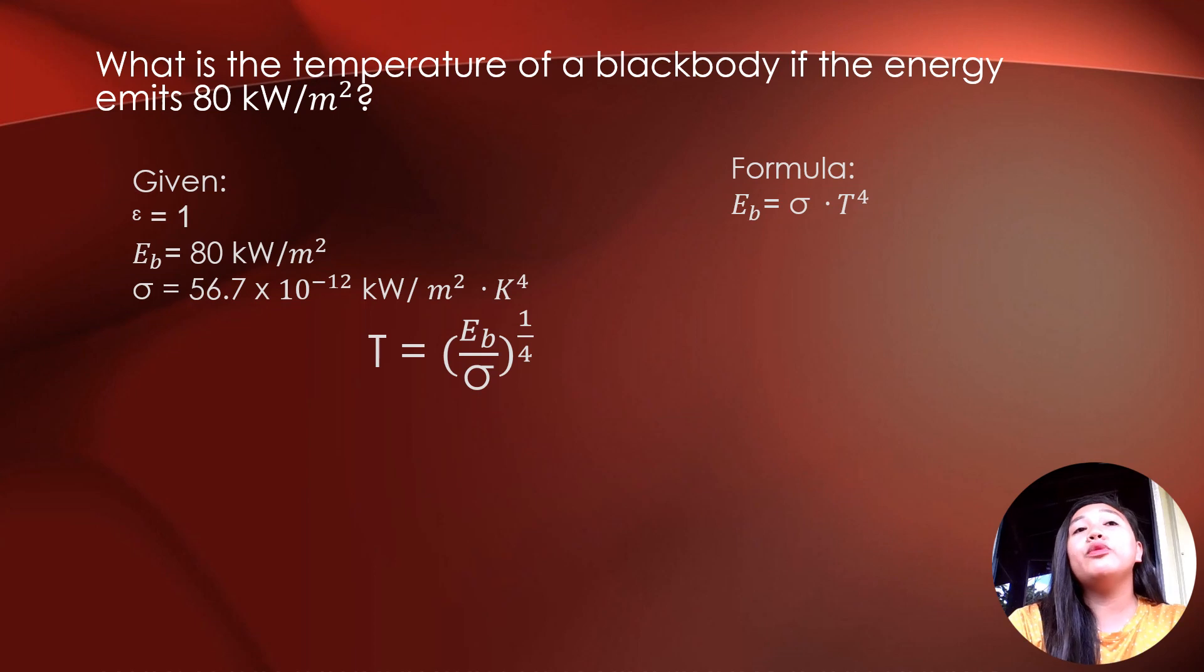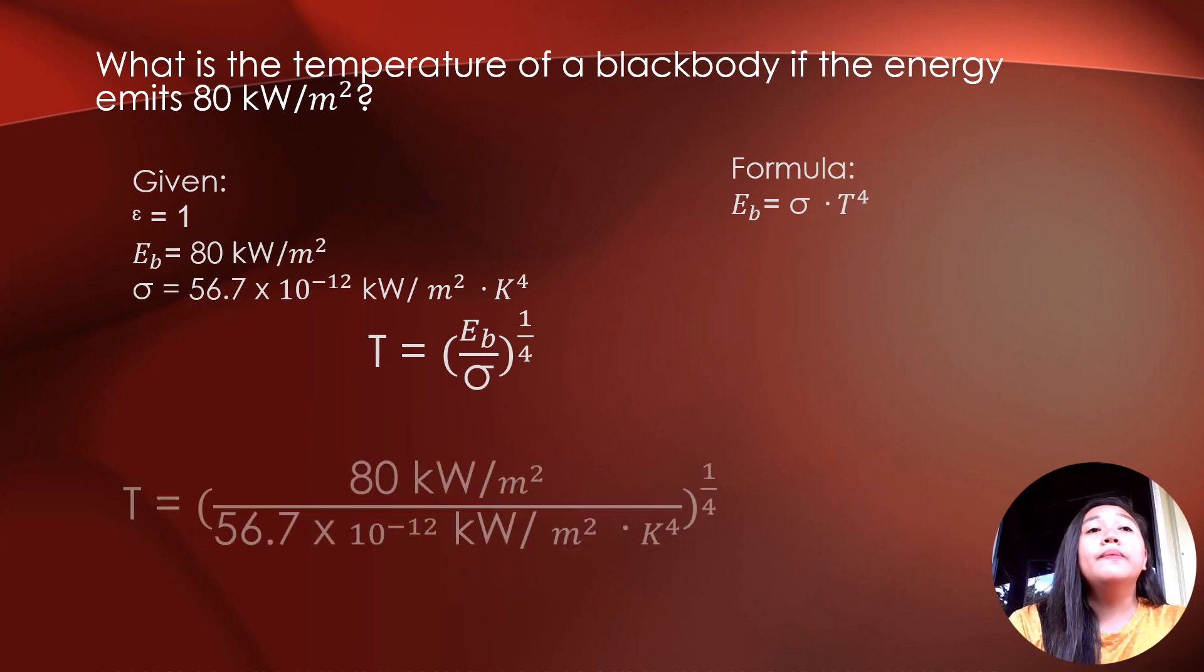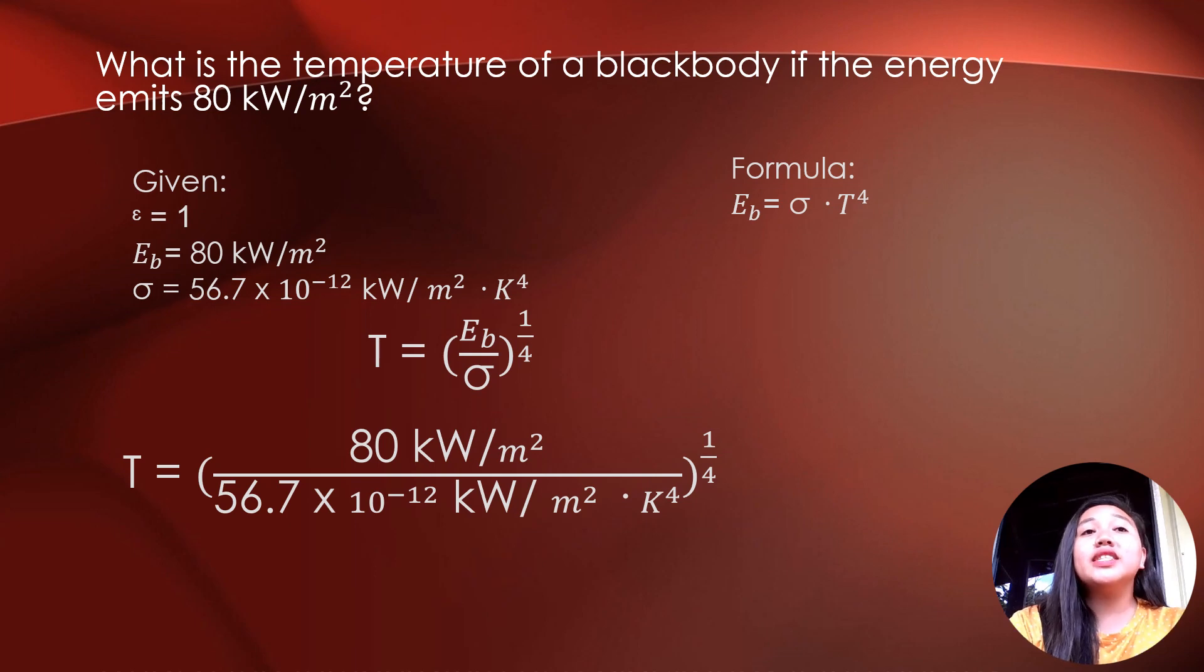So we are just going to input the given in the formula. So we have T equals 80 kilowatts per square meter over the Stefan constant which is 56.7 times 10 raised to negative 12 kilowatts per square meter times Kelvin raised to 4, raised to 1 fourth.